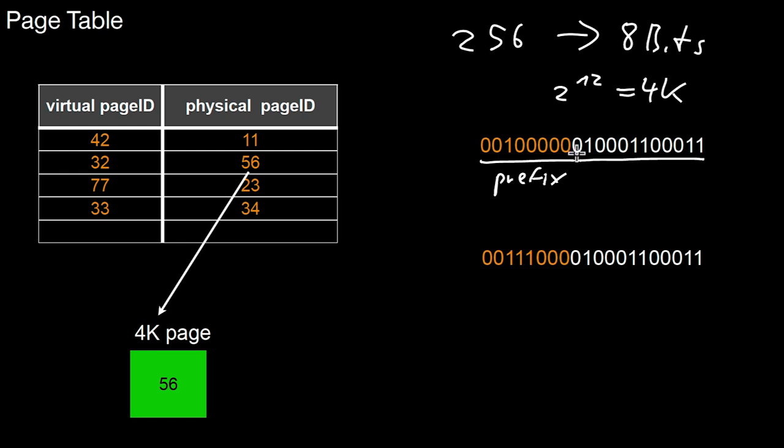So what does address translation do? Well, it has to look at the prefix only. The suffix is not changed. However, the prefix has to be mapped to the right physical page, which is 56. So basically, the physical address we are looking for can be computed by replacing this prefix with the prefix 56.